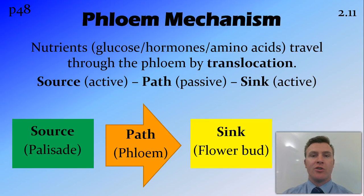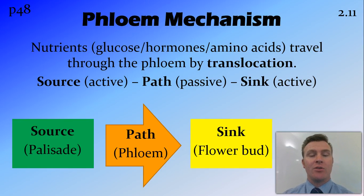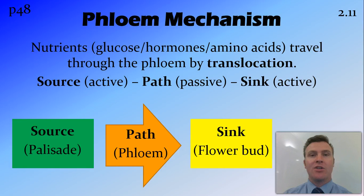The mechanism of movement of nutrients around the plant in the phloem is called translocation. Translocation works from the source — wherever the nutrient is made — through the path, which is the phloem, to the sink — wherever the nutrient is needed. For example, the source is the palisade cells in the leaves, the path is the phloem, and the sink could be a flower bud needing sugar for energy. This method of translocation is active, then passive, then active again: active to get nutrients into the phloem, passive to move them once inside, and active again to get them out at the sink.